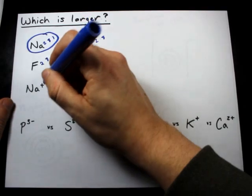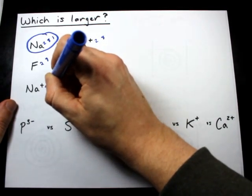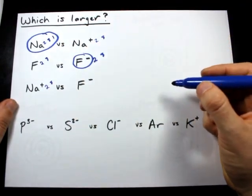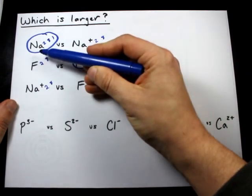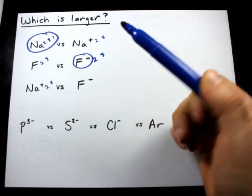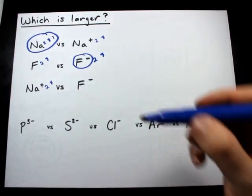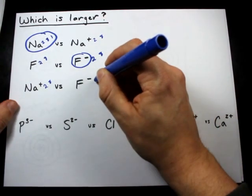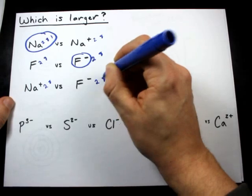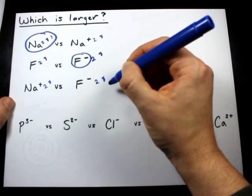Now let's do this again. Sodium plus is 2, 8, 0, because original sodium, uncharged sodium I should say, is 2, 8, 1, and it loses an electron to become Na plus. Fluorine becomes 2, 8 when it has a minus one charge. Oh, so they have the same electron configurations.